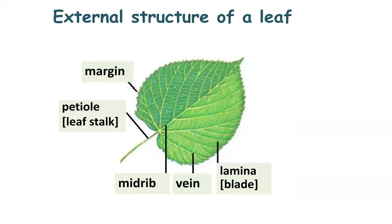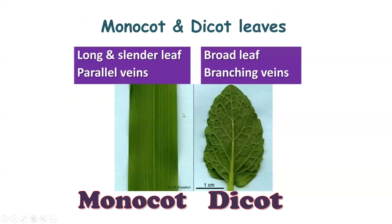Looking at the external structure of the leaf, it contains a petiole — that is the stalk of the leaf — along with margins, central midrib, veins, and lamina. Next, we can observe both dicot and monocot leaves.